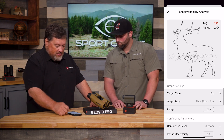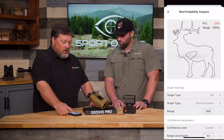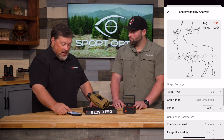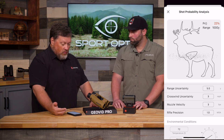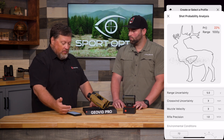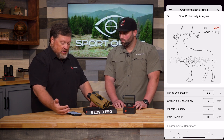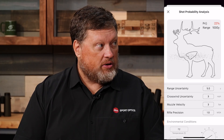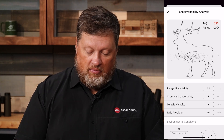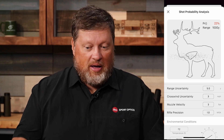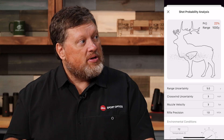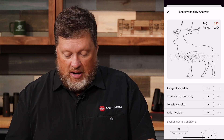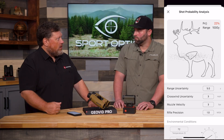Now, if you notice back up at the top, as I changed those things, before I had a green probability reading in the 80s. But now that I've been honest with myself — I'm not a 1-mile-per-hour wind measurer and not a 1-yard-at-1,000-yards distance measurer — my probability of making a first-round hit in the vitals on that elk at 1,000 yards is now 22%, not 80-something percent. It's gone from green to red, and I do not need to take that shot on that animal. No matter how good I think I am, these are the cold, hard numbers, and this is helping me be a better hunter and a better sportsman by telling me not to take the shot. If this were a steel plate, it'd be fine — I'd be winging bullets all day long, but not on the animal.